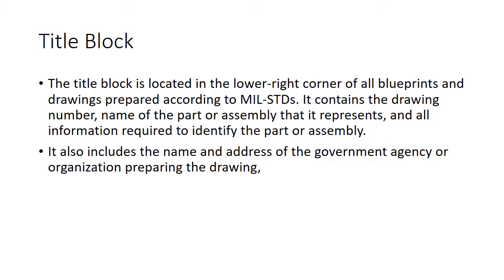The title block is located in the lower right-hand corner of all blueprints and drawings. For military, it contains the drawing number, name of the part or assembly, and all information required to identify it. It also includes the name and address of who did it. You just don't throw drawings out there without noting who prepared the drawing. The title block is like a driver's license or passport for that drawing — it tells you who did it and all the pertinent information about it.